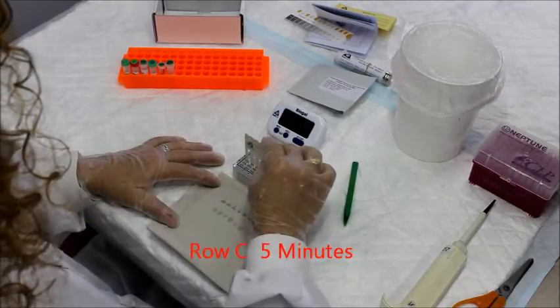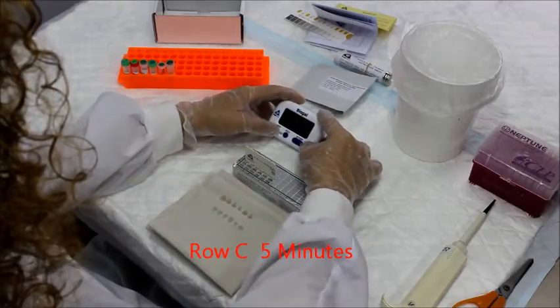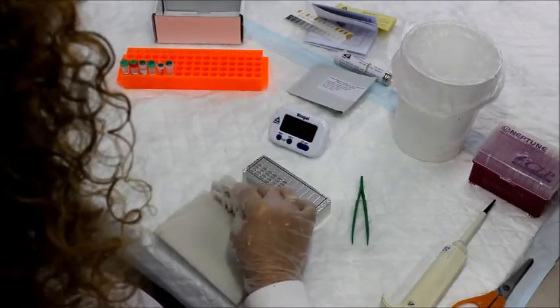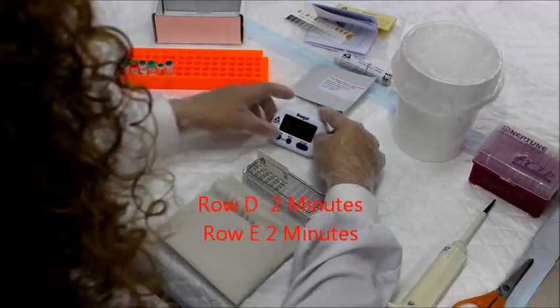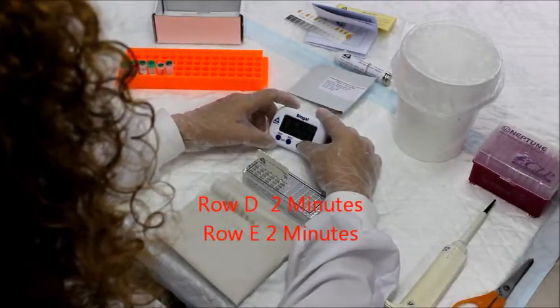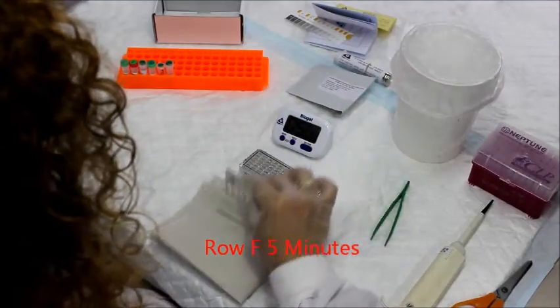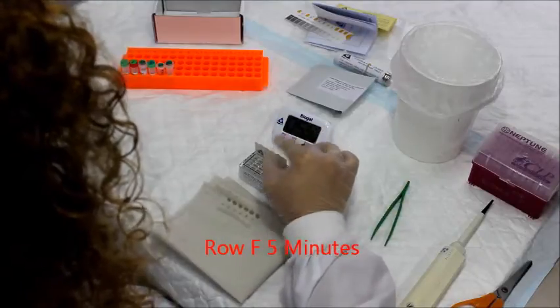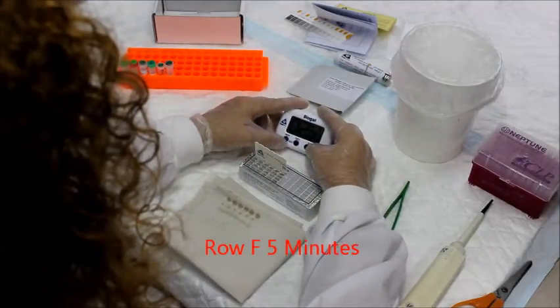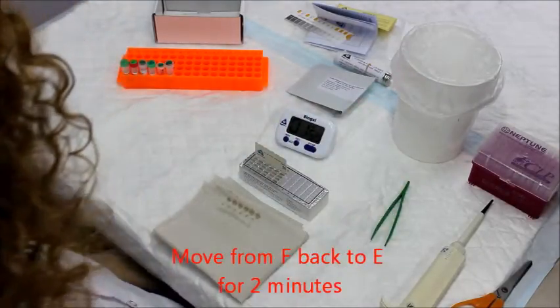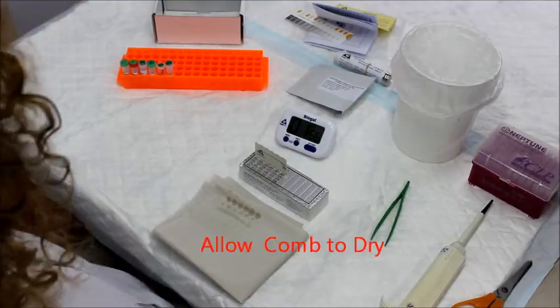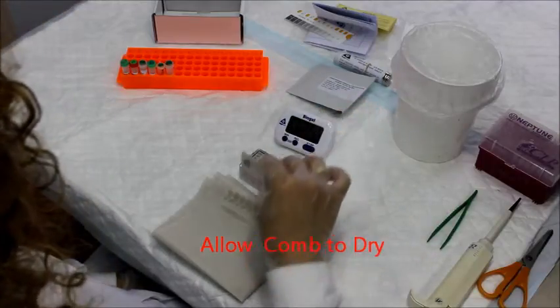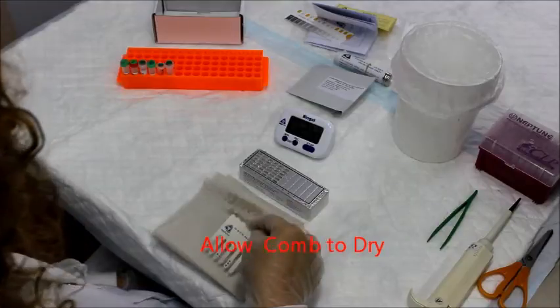Place the comb into the remaining wells, row D and E, for two minutes and the last well, which is row F, for five minutes. Upon completion of the color development in row F, move the comb back to row E for the next two minutes for color fixation. Take the comb out and let the comb dry for one to ten minutes.